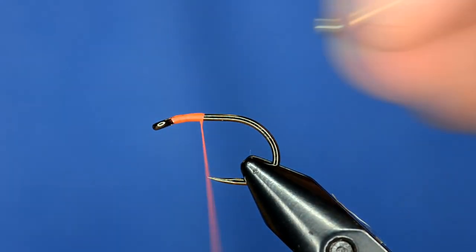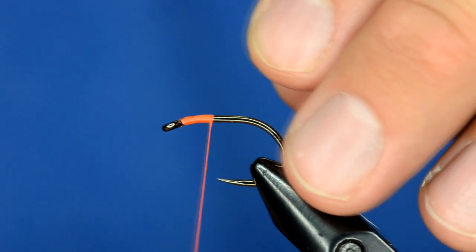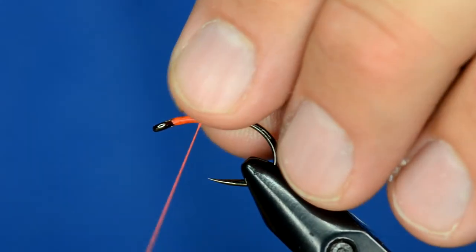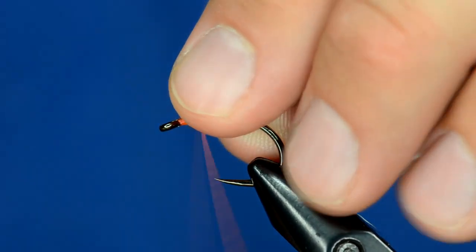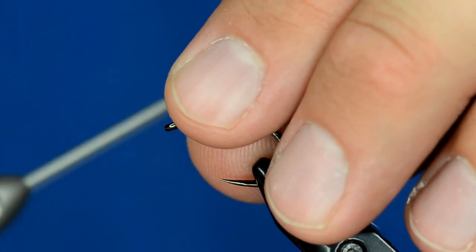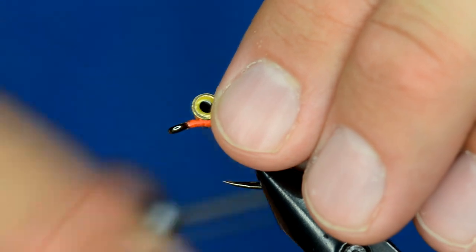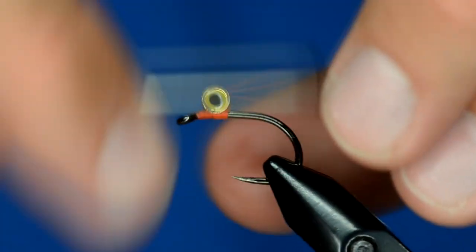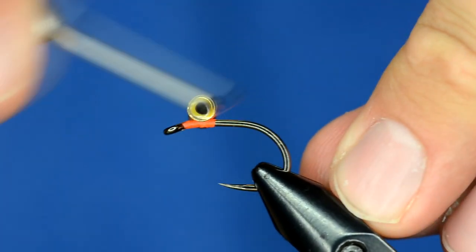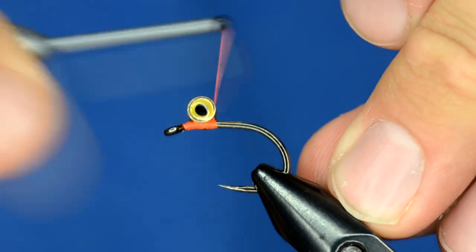And you can even use bead chain for this if you're fishing really shallow water. But these eyes aren't super heavy. So I'm going to place it back so I can just put a little bit of stuff in front of it. Just kind of get that nice and attached on there.